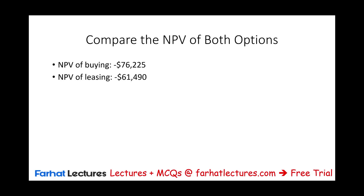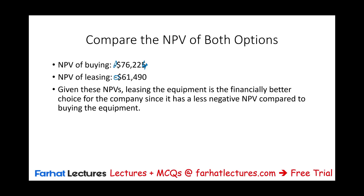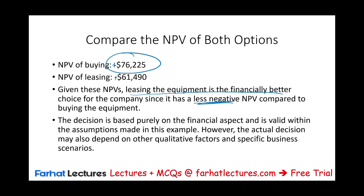Now we are ready to compare the two and make a decision. The net present value of buying is negative $67,224 (or $67,225 depending on rounding). The net present value of leasing is negative $61,490. When we have negative NPVs, we go with the lower negative NPV. Therefore, leasing the equipment is financially a better choice since it has a less negative NPV. This decision is based purely on financial aspects — in the real world you would look at other factors too. But this is an application of net present value computation, an important concept whether you are an accounting student, studying managerial or cost accounting, or preparing for the CPA or CMA exam.